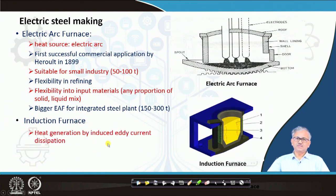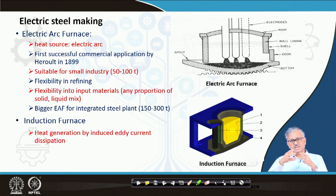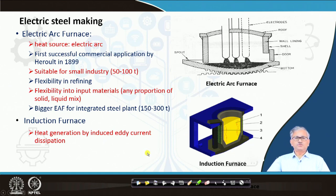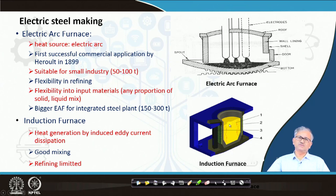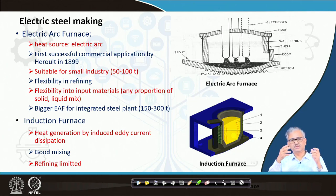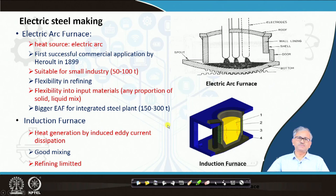In the input material, you can take any proportion of hot metal if required — you can also take this furnace in an integrated steel plant. Bigger EAF for integrated steel plants is now 150 to 300 tons. Induction furnace — as the name suggests — basically generates heat by eddy current dissipation into the hot metal. Eddy current is generated into the hot metal or scrap, which melts it. It has very good mixing — I will come back to that — and refining is limited. The heat source is eddy current dissipation into the charge material, which melts it, and refining also takes place to some extent, but it is mainly for scrap melting and limited refining.